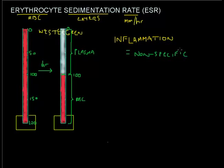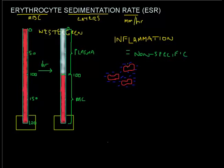To understand how this works, let's zoom in on the process of red blood cell settling. Under normal circumstances, red blood cells have a negative charge on their surface. These clouds of negative charge repel each other, preventing the red blood cells from sticking together. We call this the zeta potential — just know there is some charge that keeps the cells apart from each other.